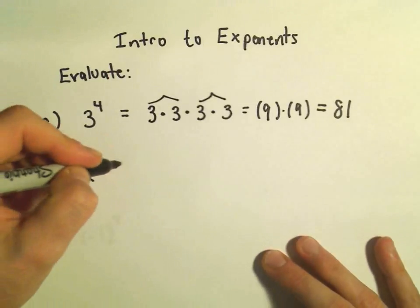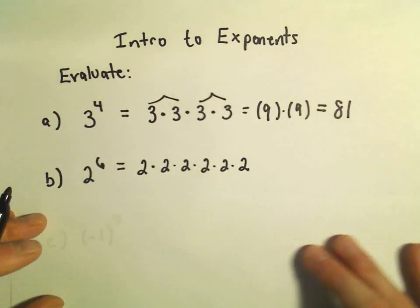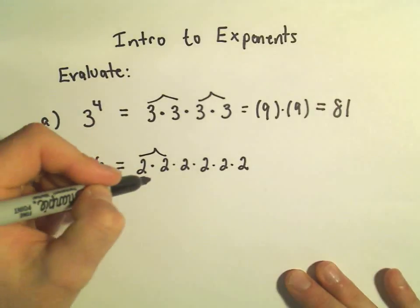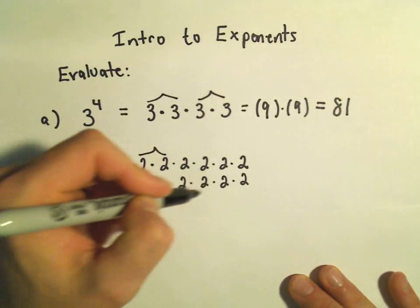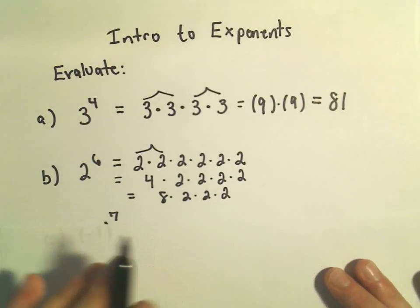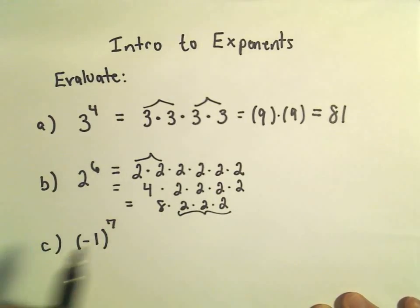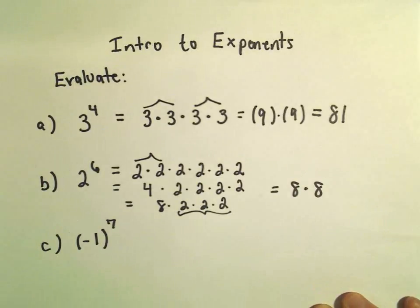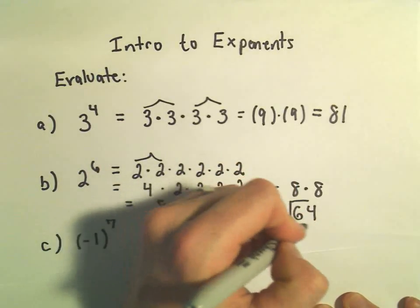2 to the 6th — a little tedious. We have 2 times 2 times 2 times 2 times 2 times 2, so that's 6 of those. If we multiply the first two, we'll get a 4. Then 4 times 2 gives us 8, and we have three 2s remaining. Multiplying 2 times 2 times 2 gives us another 8. So we have 8 times 8, which reduces to 64. So 2 to the 6th is just another way of writing the number 64.